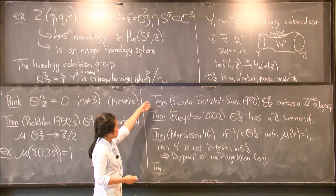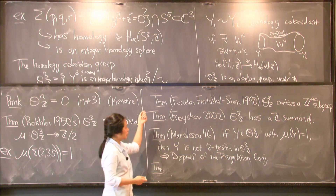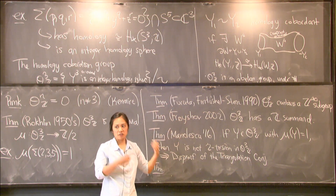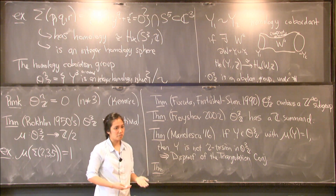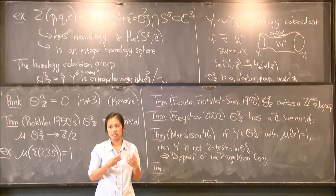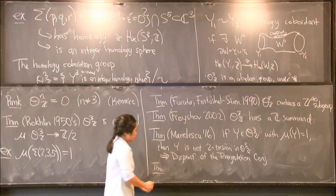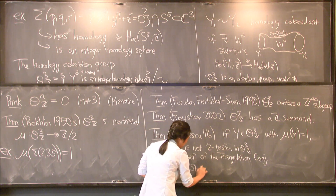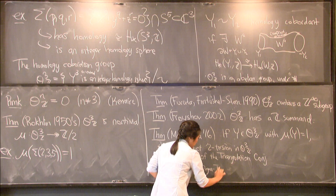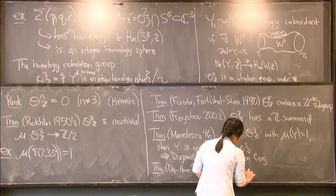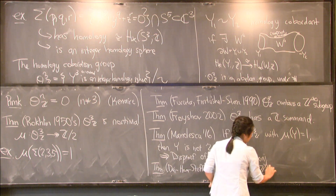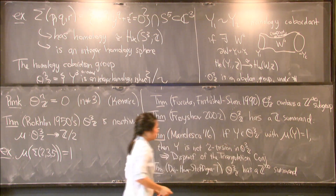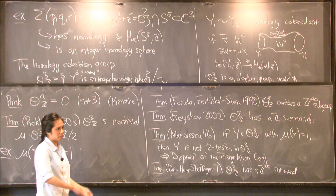Going back to the theorems of Furuta-Fintushel-Stern and Frøyshov: while we know θ³_Z has a Z∞ subgroup and a Z summand, a natural question that had been asked for a long time is whether θ³_Z contains a Z∞ summand. In joint work with Irving Dai, Jen Hom, and Matt Stoffregen, we showed that indeed θ³_Z contains an infinite rank summand generated by a family of Brieskorn homology spheres.